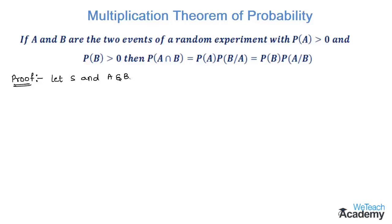in the sample space, and the probability of A is greater than 0 and probability of B is also greater than 0. In our previous video we discussed the conditional probability.